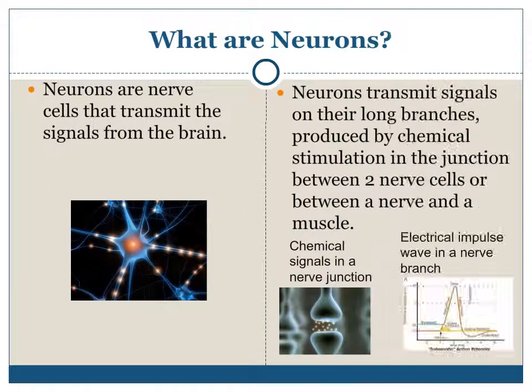What are neurons? Neurons are nerve cells that transmit the signals from the brain. Neurons transmit signals on their long branches produced by chemical stimulation in the junction between two nerve cells or between a nerve and a muscle.